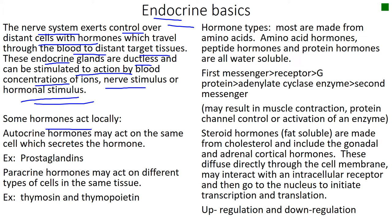In a way, prostaglandins is an autocrine hormone. It can be autocrine and it can be paracrine, but the autocrine effect of prostaglandins means that a cell might release prostaglandins and it will make itself contract.